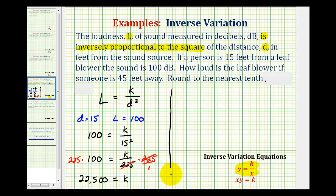So then for this leaf blower, the equation that relates the loudness and the distance from the leaf blower would be L equals our variation constant, which is 22,500, divided by d squared.